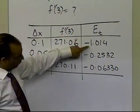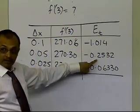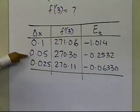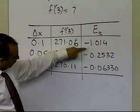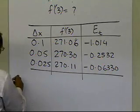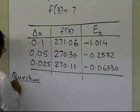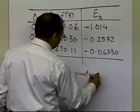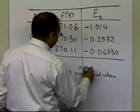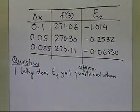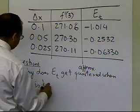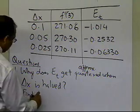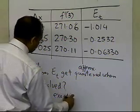What you're finding out here is that the true error gets approximately quartered as you halve the step size. For example, from −1 to about −0.25 to about −0.06 — it's getting quartered each time. This is not a coincidence. So here are two homework questions: first, why does the true error get approximately quartered when Δx is halved — can you prove that? And second, find f'(3) exactly using your differential calculus knowledge. That's the end of this segment.